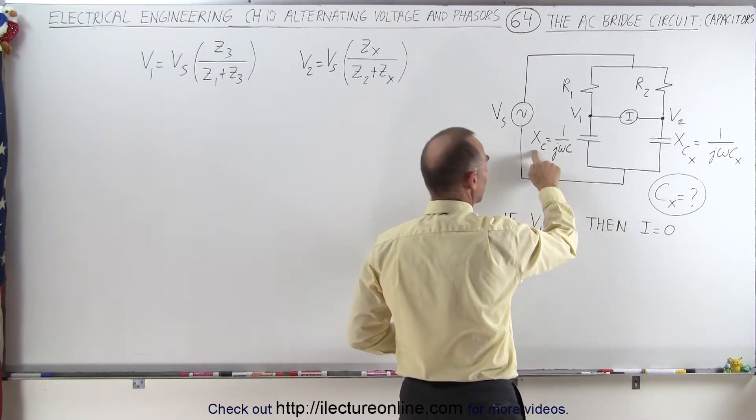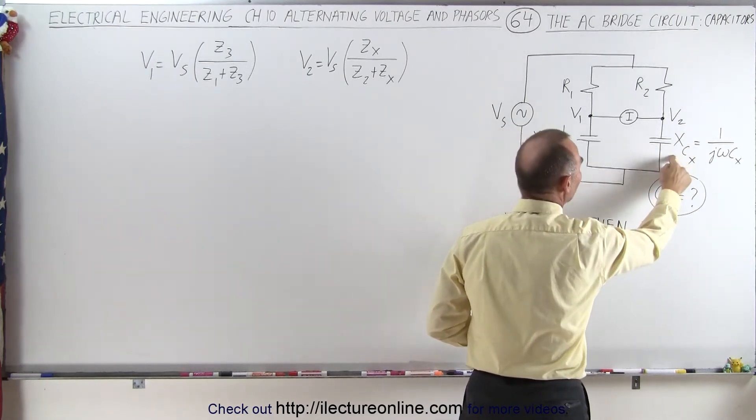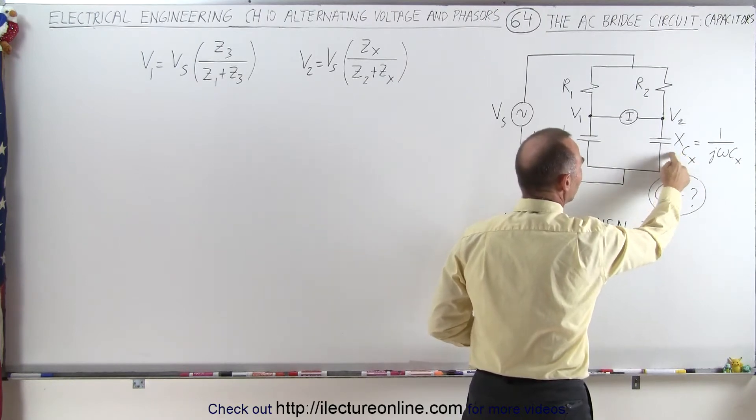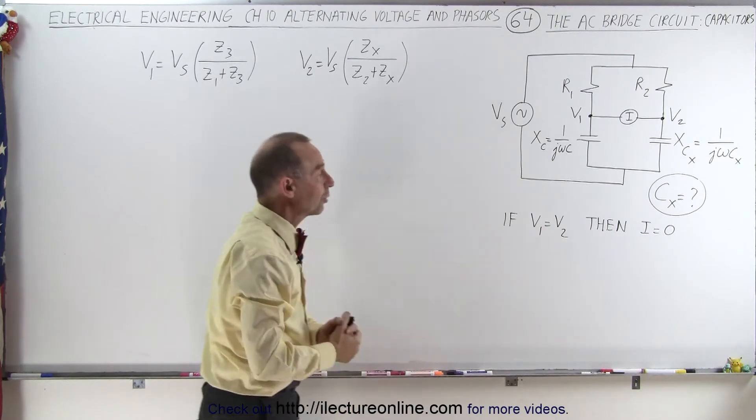On the left side, the capacitor reactance is 1 over j omega c. On the right side, with the unknown capacitor, the capacitor reactance will be 1 over j omega c sub x, c sub x being the unknown capacitor.